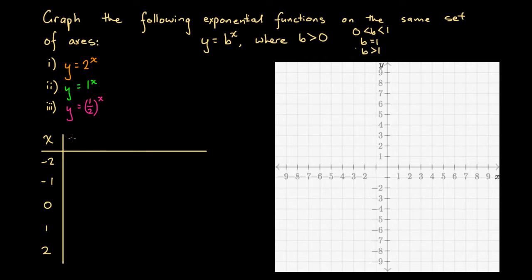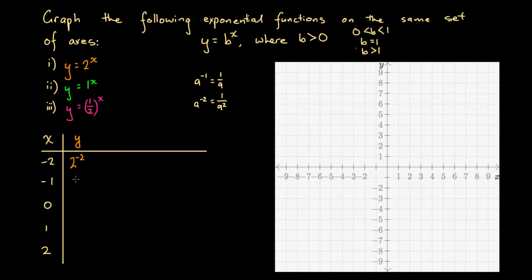Let's begin with the first one in orange. We input each x value into y equals 2 to the x. At x equals minus 2, we get 2 to the power of minus 2. By our indice laws, a to the power of minus 1 is 1 over a, and a to the power of minus 2 is 1 over a squared. So 2 to the minus 2 equals 1 over 4. At x equals minus 1, we get 2 to the power of minus 1, which is one half.